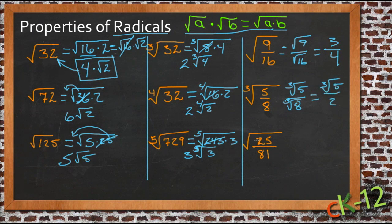And then the square root of 25 81ths would just be the square root of 25 over the square root of 81, or 5 9ths.